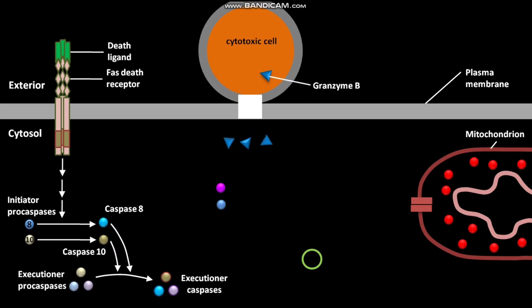The granzyme B then causes conversion of executioner procaspase-3 into caspase-3. The granzyme B also causes conversion of executioner procaspase-8 into caspase-8. Caspase-3 and caspase-8 also help in conversion of other executioner procaspases into executioner caspases.